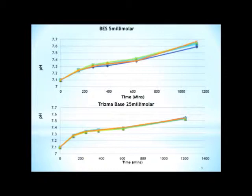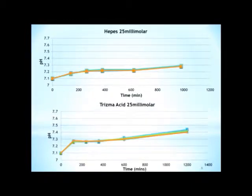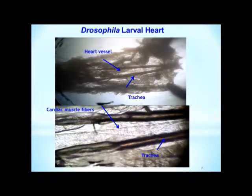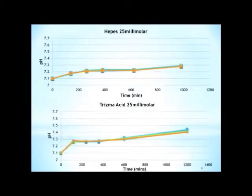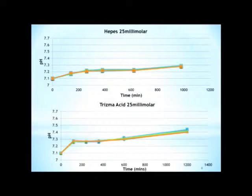BES at 5 actually drifted the most out of them all. Trisma Base drifted above 7.5. HEPES at 25 millimolar only drifted to 7.3. Trisma Acid at 25 millimolar drifted to about 7.4. These were the main solutions that I wanted to focus on.